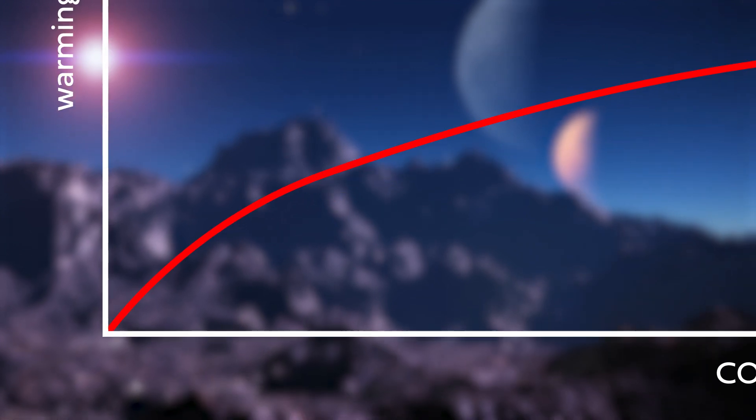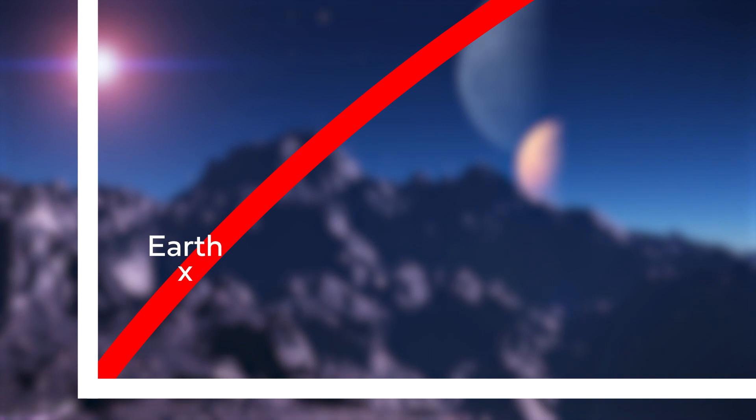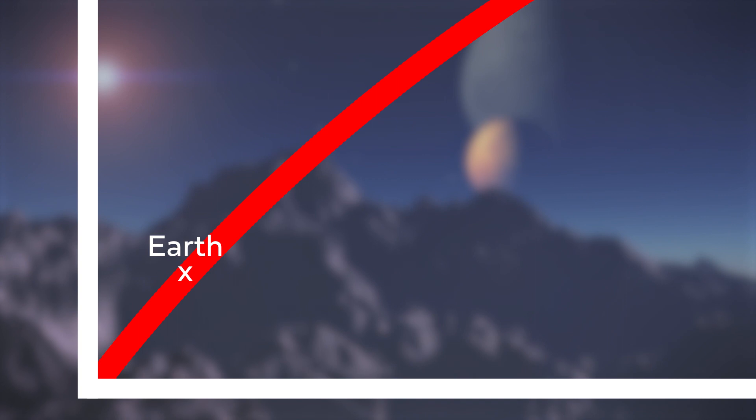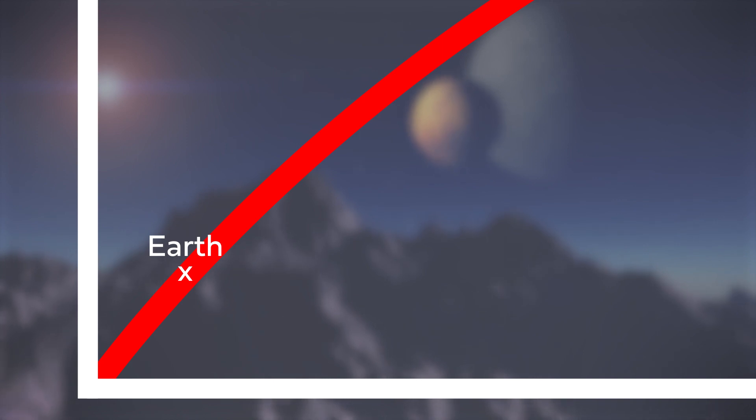CO2 causing warming is a non-linear process, sure, but if you add CO2 to the atmosphere right now, you're still causing basically as much additional warming as if there were no CO2 present to begin with, because it's still such a small part of our atmosphere.